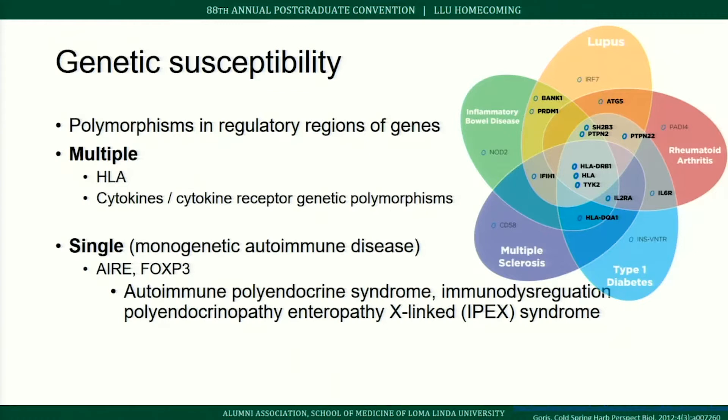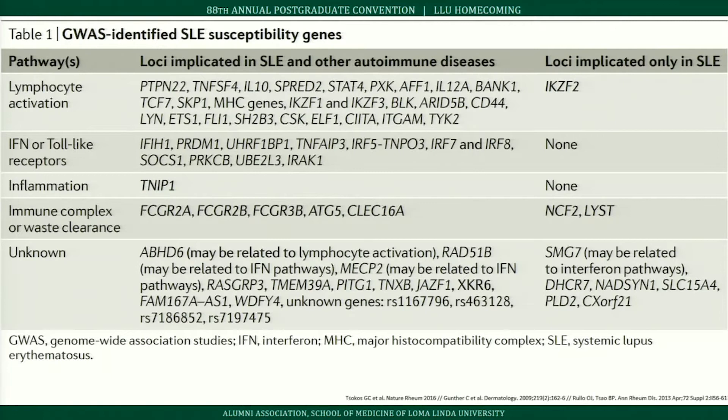Genome-wide association studies in lupus have identified genes acting on pathways including lymphocyte activation, interferon signaling, toll-like receptors, inflammation, and immune complex or waste clearance. However, even patients with all these genetic associations still need some additional environmental exposure — the genes alone are not sufficient to cause disease.